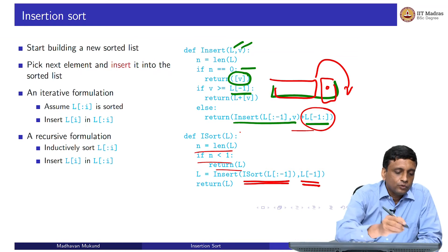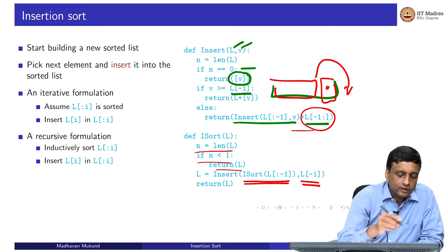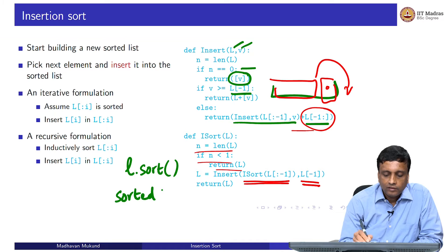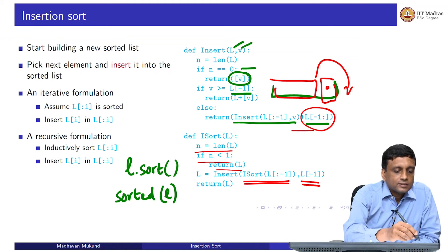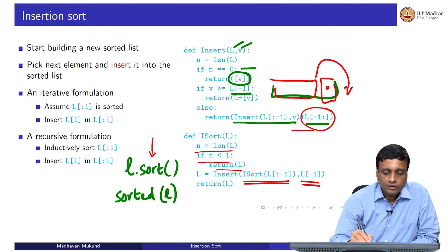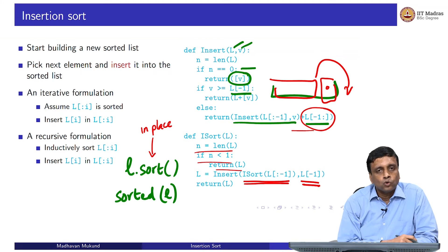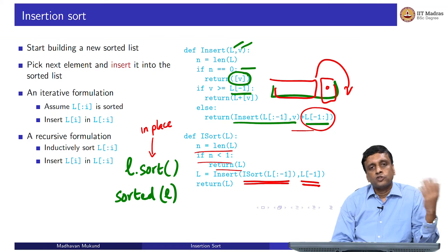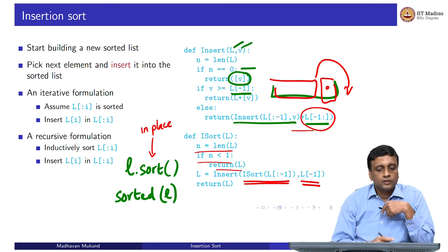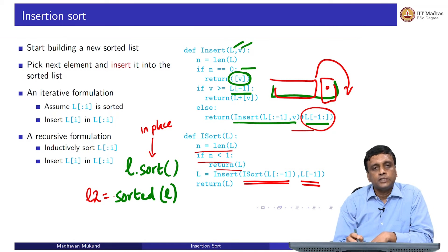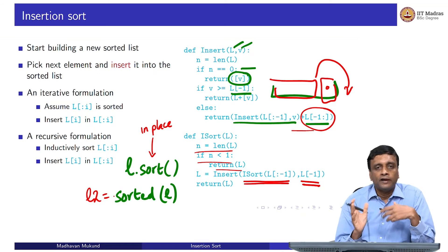In Python there are two ways to sort a list built-in. There is l.sort(), which is an in-place sort — it takes l and updates it to a sorted version of itself. But sometimes you do not want that; you want to keep l but have a sorted version of its values. Then you should use l2 = sorted(l), so l will not change but l2 will be the sorted version. It is useful to have both versions. This highlights that the recursive version of insertion sort creates a new list, whereas the iterative version updates the list in place.